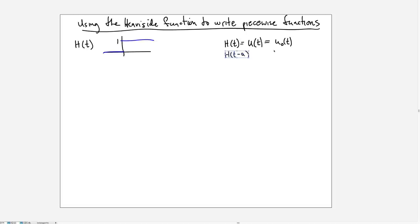If you wanted to shift the jump to other points, you could write h of t minus a which shifts the jump to a point t equal a. In u notation it would look like u of t minus a, and in the subscript notation it would look like u sub a of t. All three of these are exactly the same function.